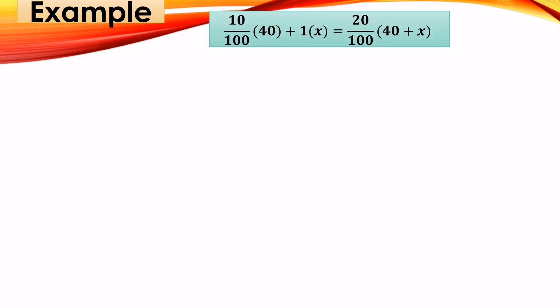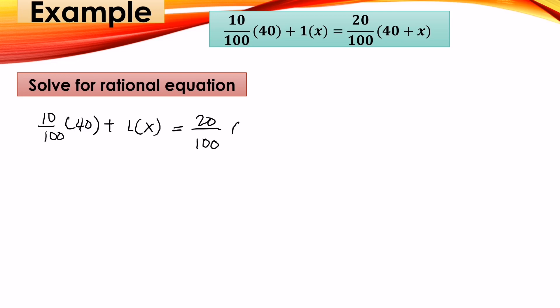Again, our equation is 10/100 times 40 plus x equals 20/100 times (40 plus x). We need to solve for the rational equation. We need to find the LCD. The LCD is 100, so multiply both sides by 100.